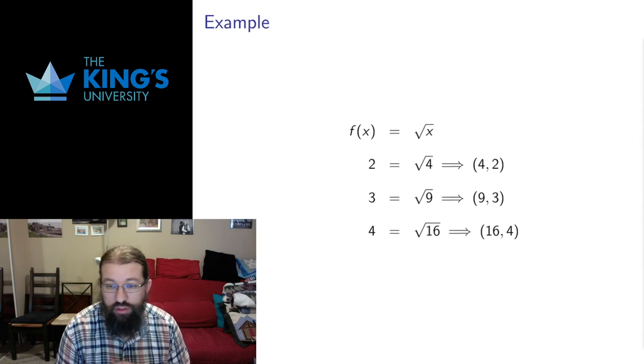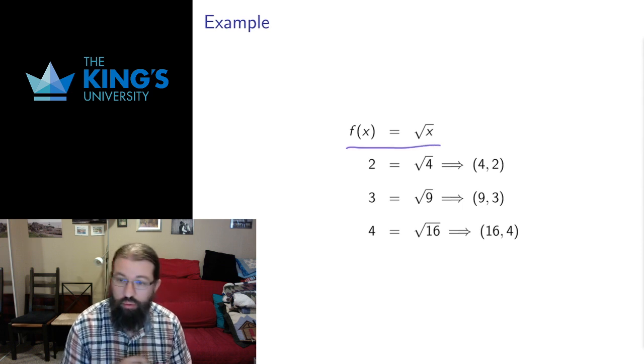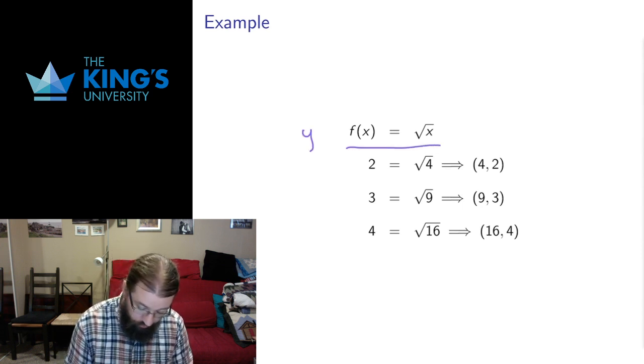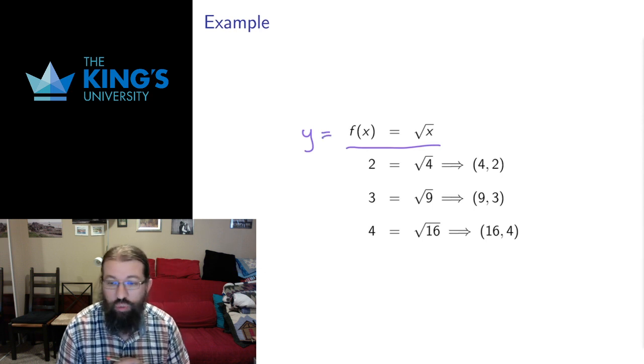The idea with graphs of functions is that we can understand functions in the Cartesian plane using coordinates. So if I have a function, in this case the square root function, I can think of the right side of the function as y-coordinate and the input of the function as the x-coordinate.